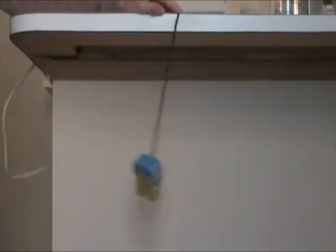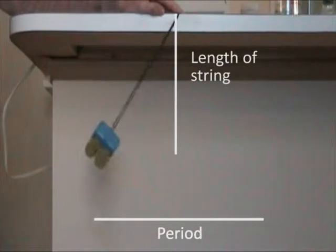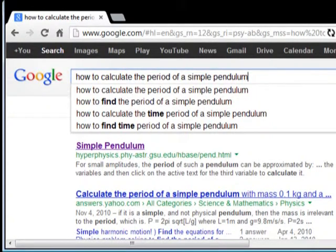With a simple pendulum, all you need to calculate the period is just the length of the string. And there's a formula for figuring out the period from the length of the string. We don't have to know exactly what that formula is. We can just use Google to find a formula calculator.